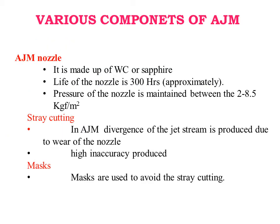AJM nozzle: It is made of tungsten carbide and/or sapphire. Life of the nozzle is 300 hours. Pressure at the nozzle is maintained at 2 to 8.5 kgf per mm². Stray cutting: In AJM, divergence of the jet stream is produced due to wear of the nozzle, causing inaccuracy. Masks are used to avoid stray cutting.